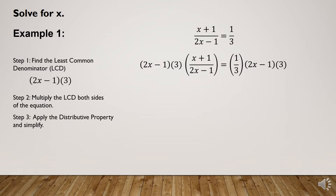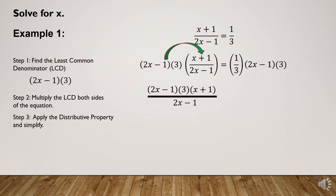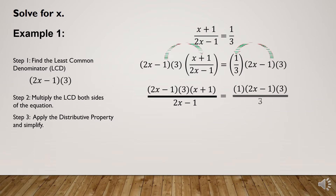We will now apply the distributive property and simplify. Multiplying (2x - 1)(3) to the numerator only — we get (2x - 1)(3)(x + 1) all over the denominator, which we just copy. On the other side of the equation, we multiply the LCD to the numerator, giving us 1 times (2x - 1)(3) all over the denominator 3.